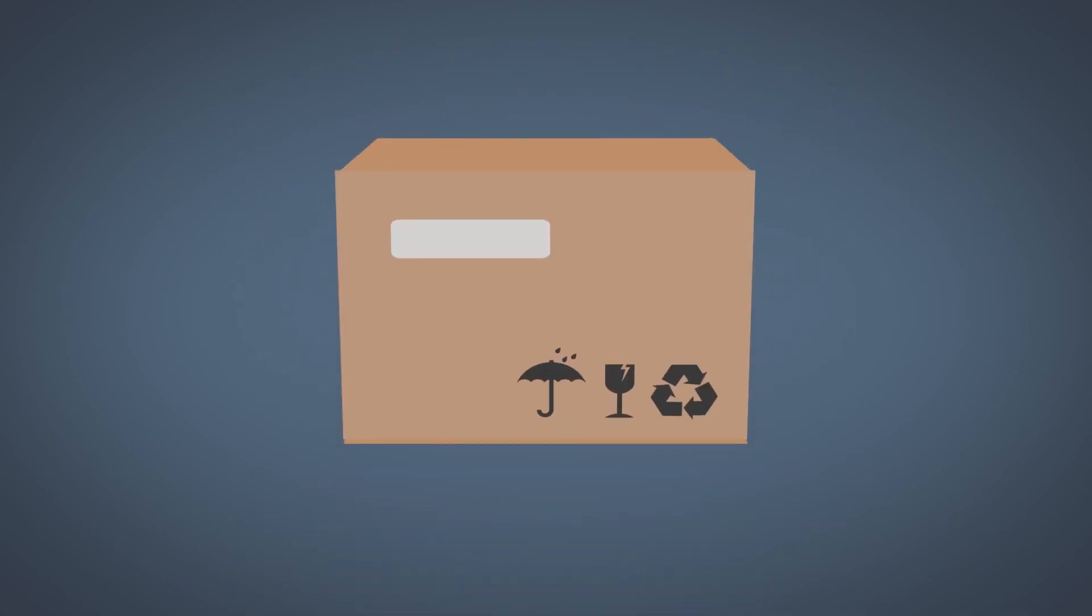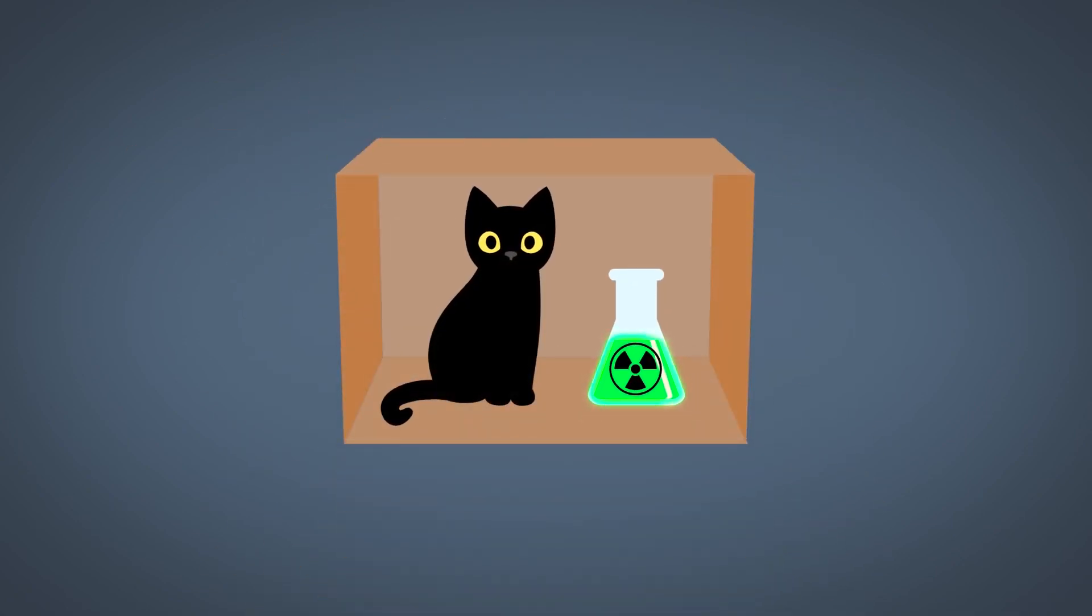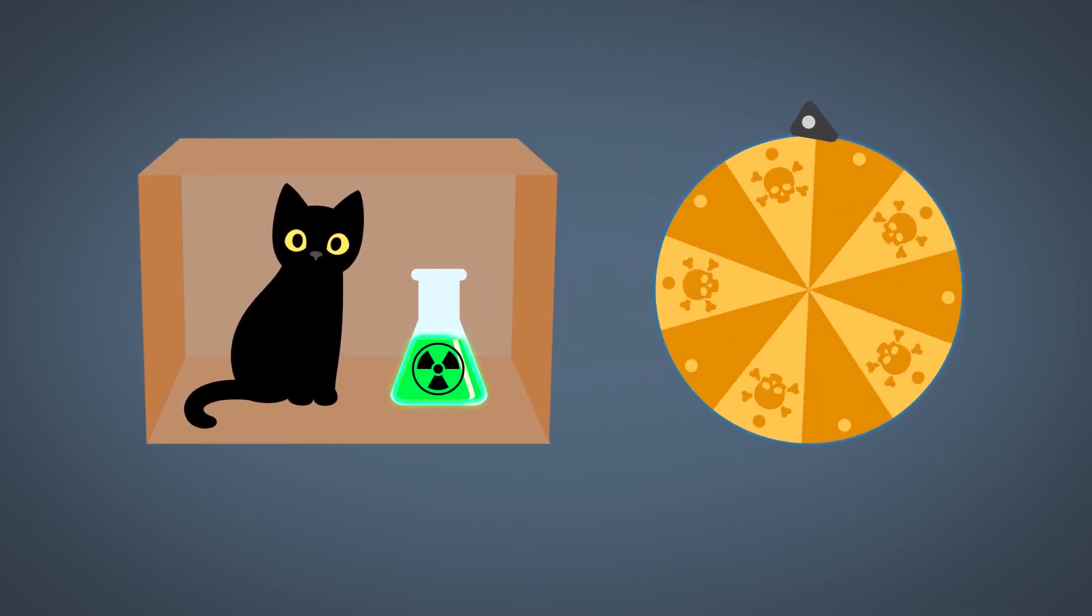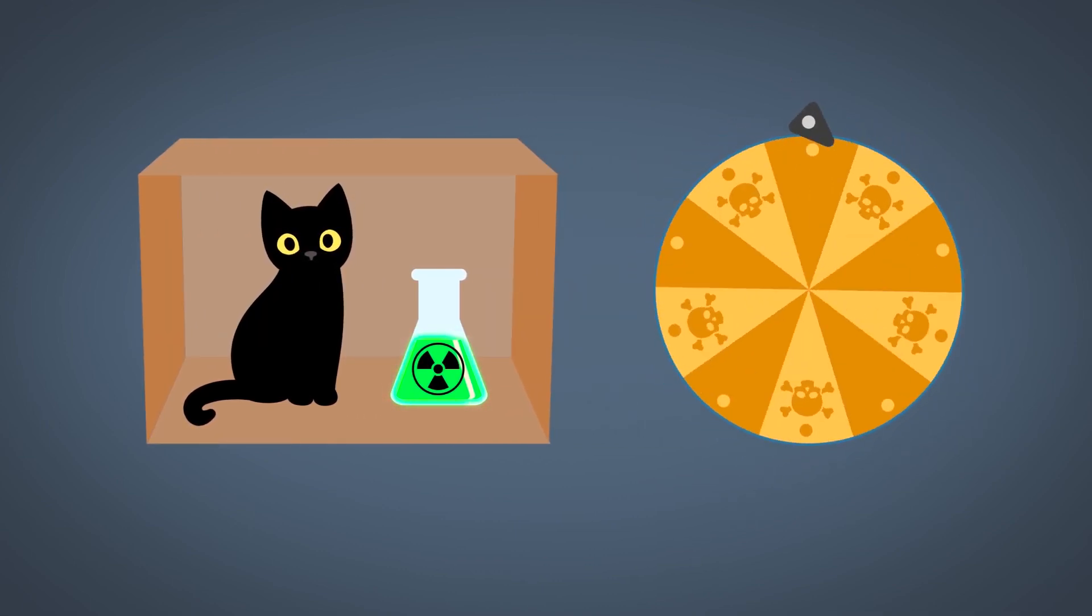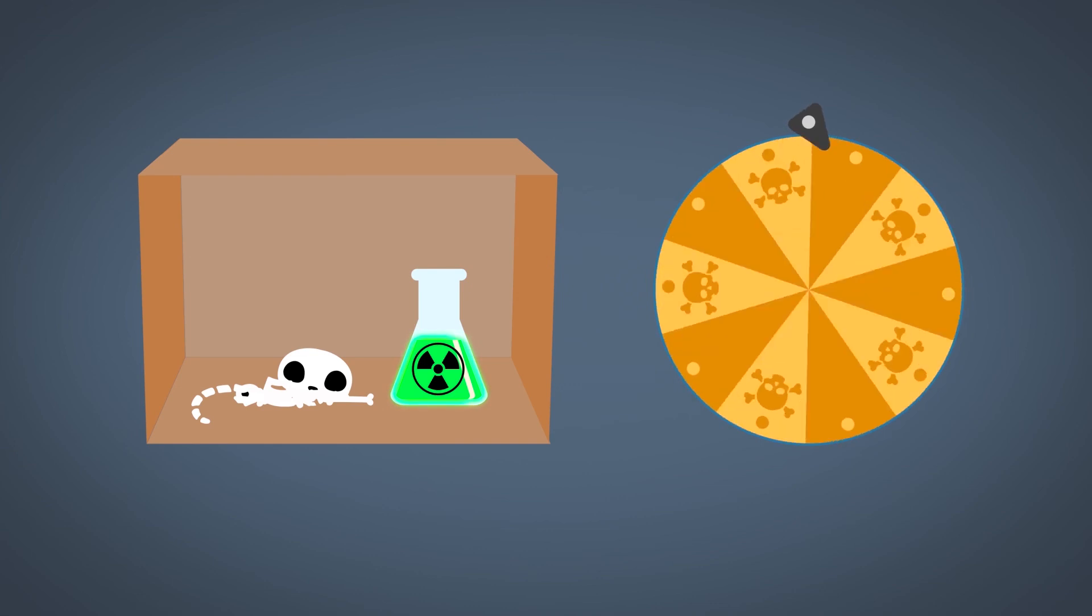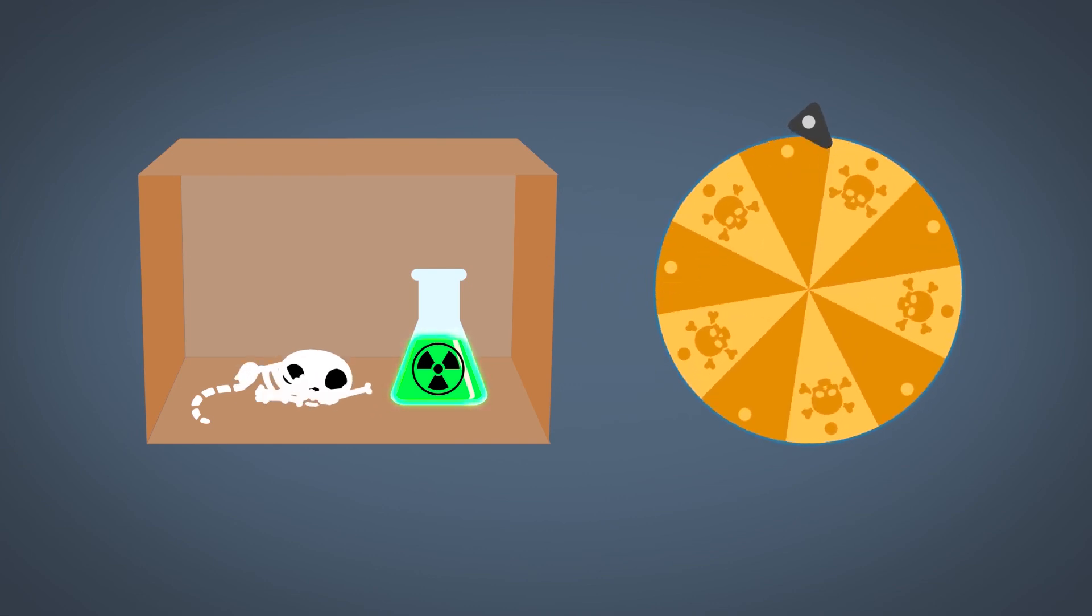He said, what if you put a cat in a box, you close the lid, and you put some radioactive element in there. And say there's a 50-50 chance that the radioactive element will decay, it will poison the cat, and it will kill the cat. But there's a 50% chance that it won't decay, nothing bad will happen, and the cat will live.